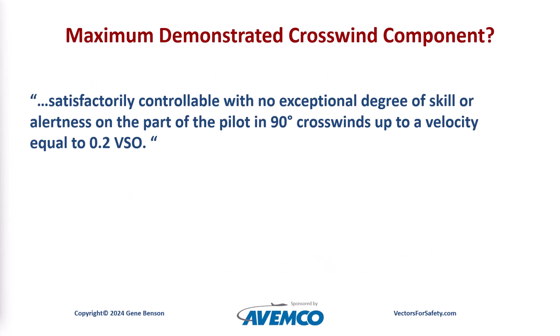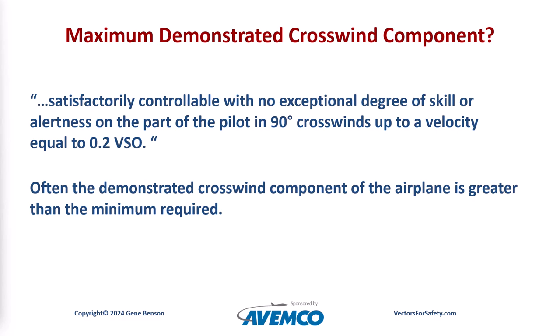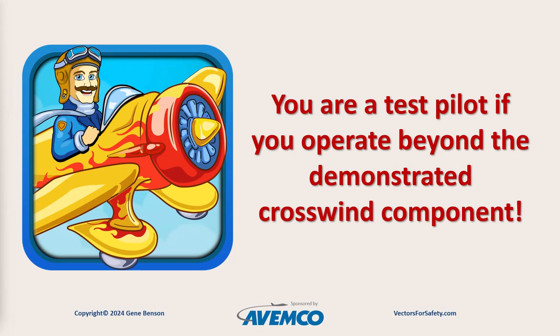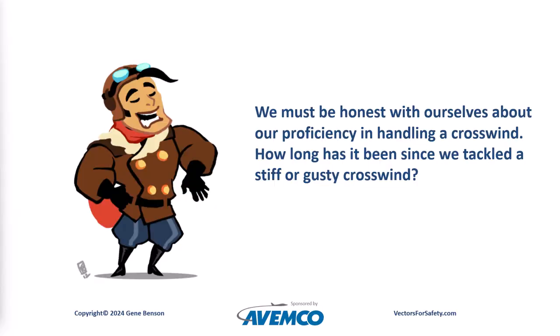What about the maximum demonstrated crosswind component? To be certified, an airplane must be satisfactorily controllable with no exceptional degree of skill or alertness on the part of the pilot in 90 degree crosswinds up to a velocity equal to 0.2 VSO. Often the demonstrated crosswind component is greater than the minimum required. It is not a regulatory requirement under Part 91. But remember, you are a test pilot if you operate beyond the demonstrated crosswind component. However, the maximum for the airplane might not be the maximum for the pilot.